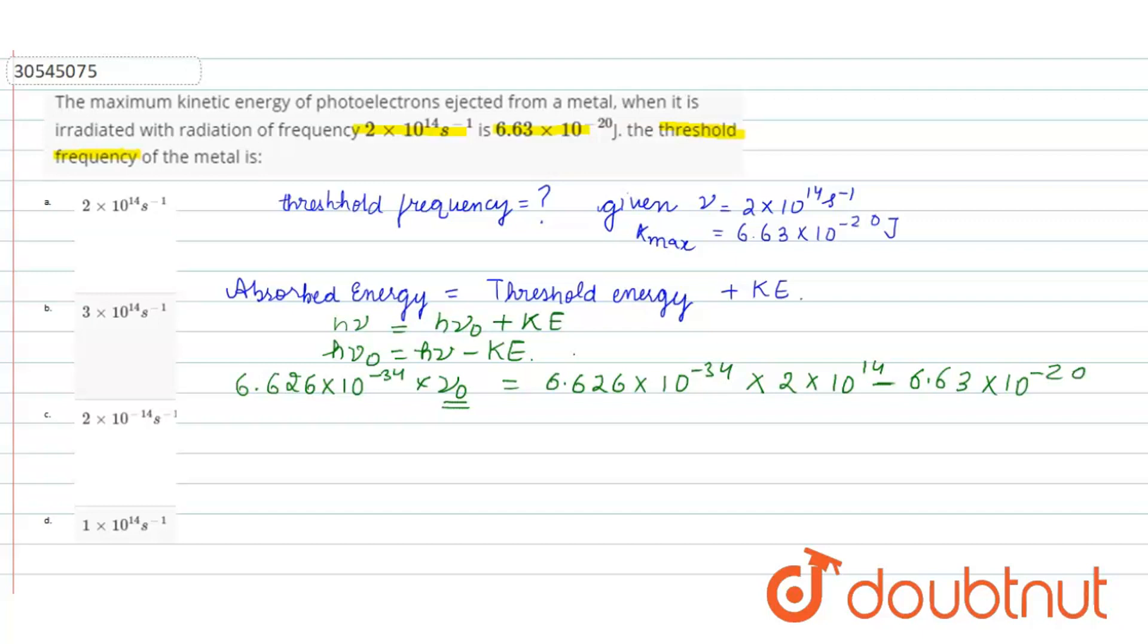From here, nu naught is 6.626 into 10 raise to power minus 34 into 2 into 10 to power 14 minus 6.63 into 10 raise to power minus 20.